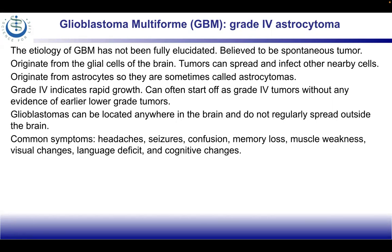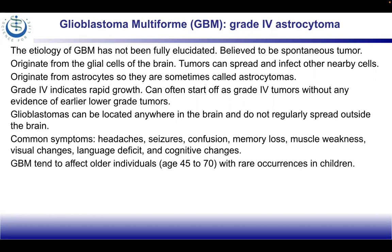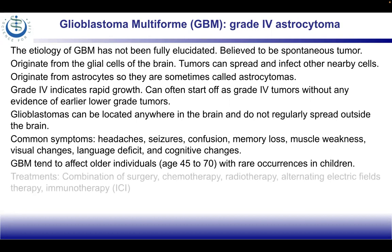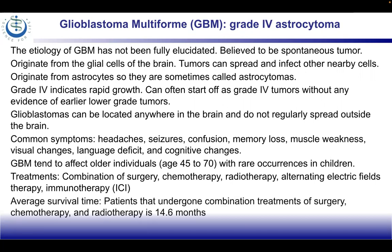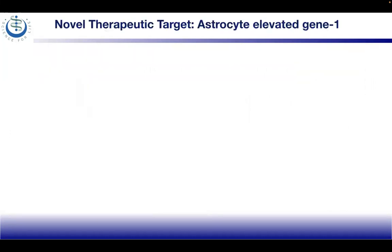Common symptoms include headaches, seizures, confusion, memory loss, muscle weakness, visual changes, language deficits, and cognitive changes. GBM tends to affect older individuals between ages 45 to 70, with rare occurrences in children. Treatments include surgery, chemotherapy, radiotherapy, alternating electric fields therapy, and immunotherapy such as immune checkpoint inhibitors. The average survival time after combinations of surgery, chemotherapy, and radiotherapy is about 14.6 months.